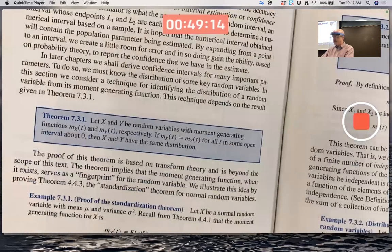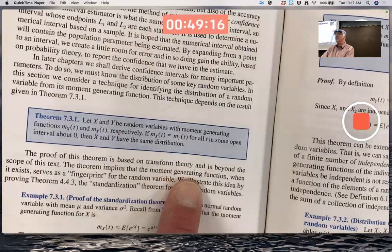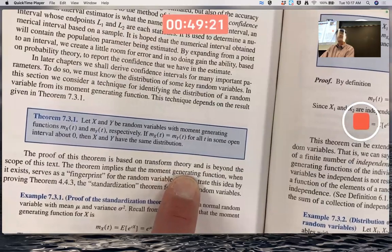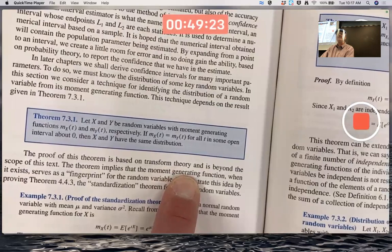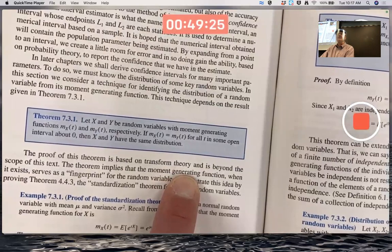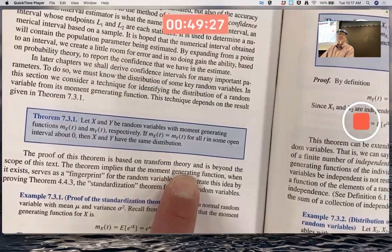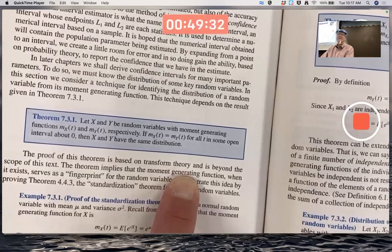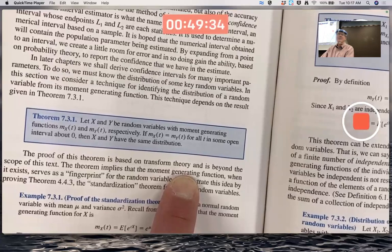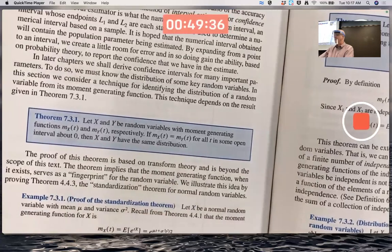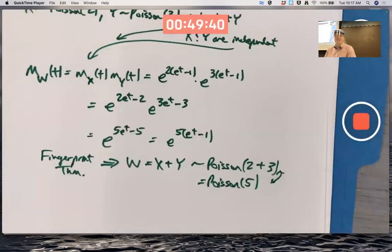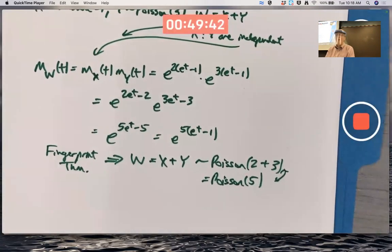It's pretty advanced math for the fingerprint theorem. Proof is based on transform theory. Even just saying transform theory sounds scary. Transform theory. It's related to things like Laplace transforms and Fourier transforms. Essentially, the moment generating function is related to transforms, but we're happy to use the theorems without proofs.